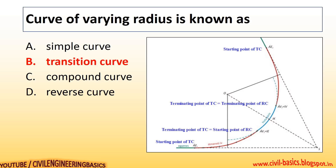A curve of varying radius is known as a transition curve. You can see the diagram of a transition curve.